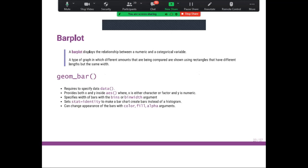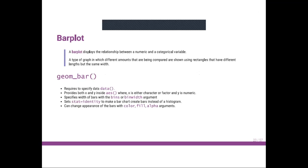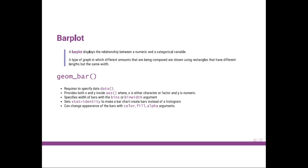Now we move to another type of graph: the bar plot. A bar plot displays the relation between a numeric and a categorical variable. It compares different amounts using rectangles of different length but the same width. In ggplot2, geom_bar() enables us to create bar plots. It requires specifying the data, and like geom_boxplot(), you need to provide both x and y inside aes(). You also need to specify the width with the width argument and set stat = 'identity' to create a bar chart instead of a histogram.